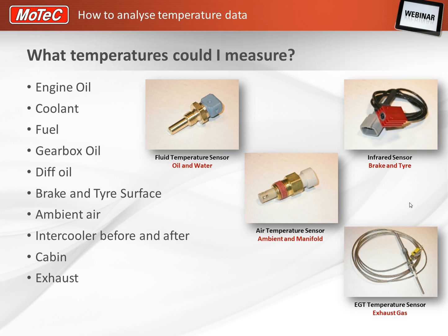In the bottom right, we have an exhaust gas K-type thermocouple, or an exhaust gas probe. This is for measuring high temperatures found in an engine's exhaust headers. These are particularly useful to ensure you're not seeing temperatures that could cause damage to exhaust valves or turbos.